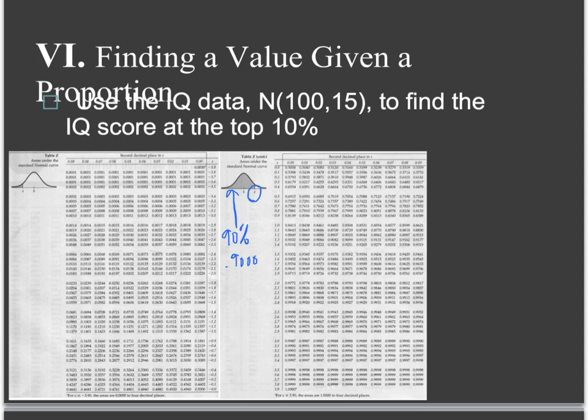If we look in here for 0.9000, we end up somewhere between these two. I'm going to call it 1.28 approximately. 1.28 is the z score, and that's going to be the X that we're looking for minus the mean over the standard deviation. That'll give us 19.2 equals X minus 100. X is going to equal 119.2.